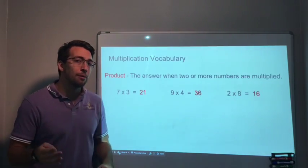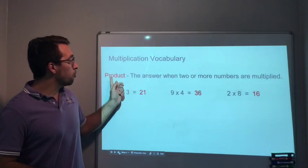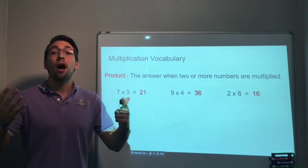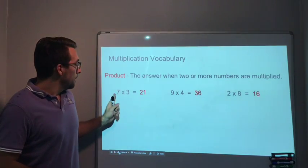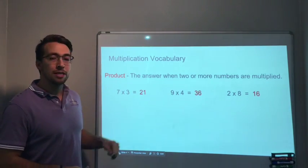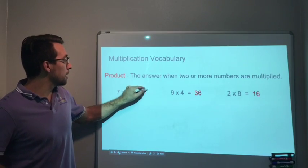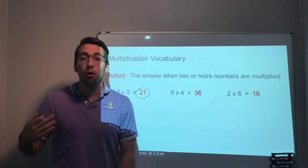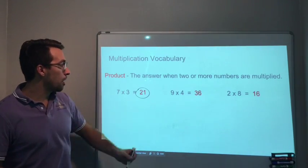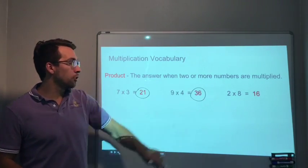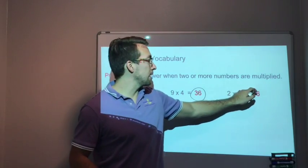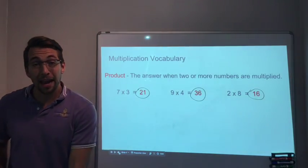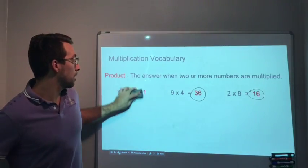We have 4 more vocabulary terms to deal with. The product. Anytime you're talking about multiplication, the product is a term that could be used. 7 × 3 is 21. The product is the answer when two or more numbers are multiplied. 9 × 4 is 36. 2 × 8 is 16. The product is the answer of a multiplication problem.